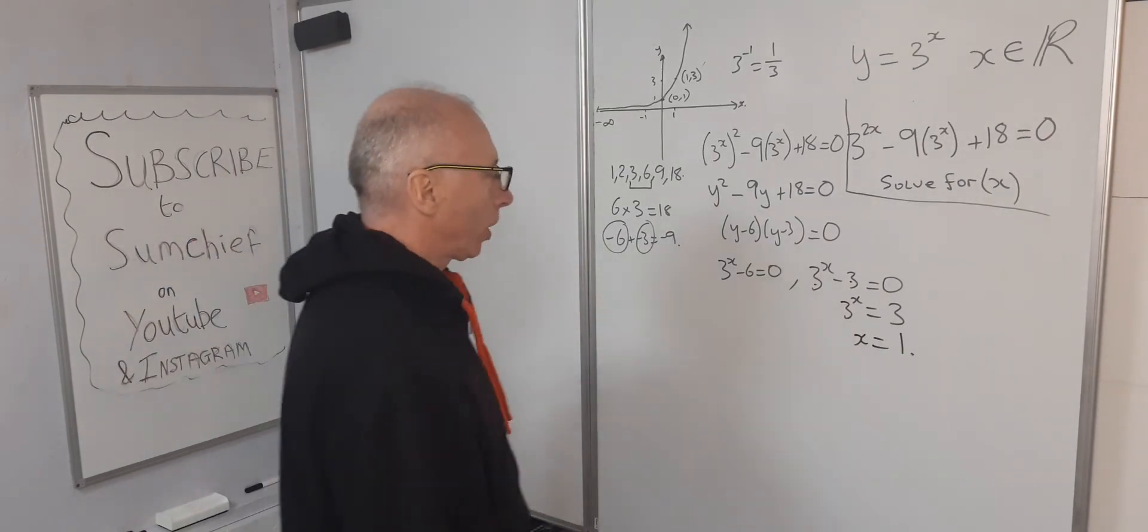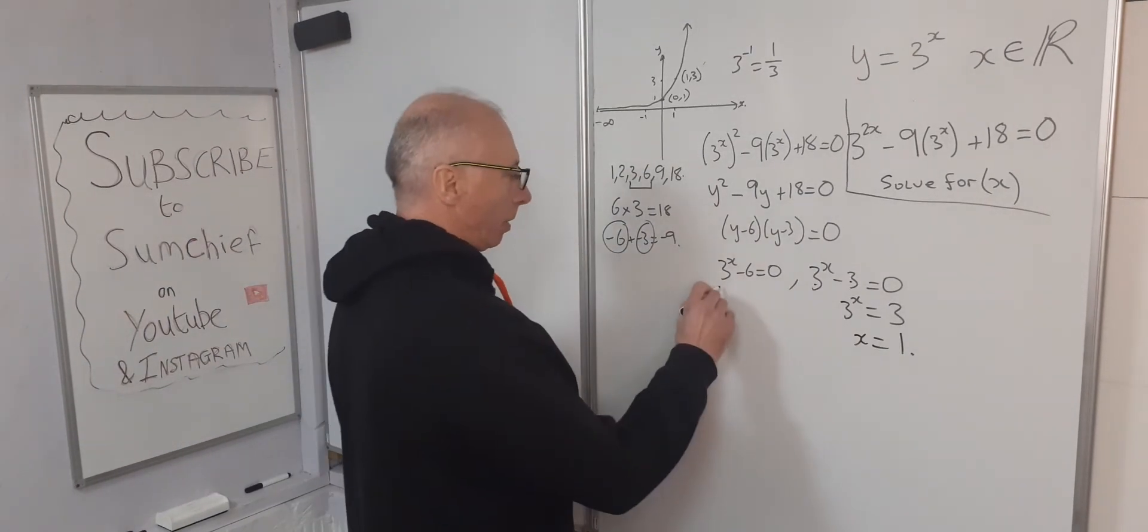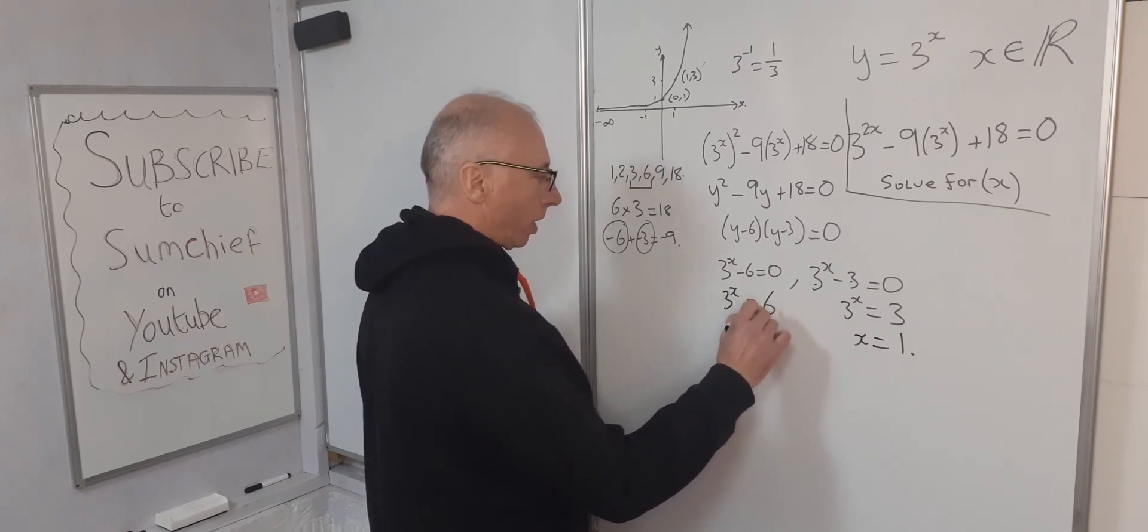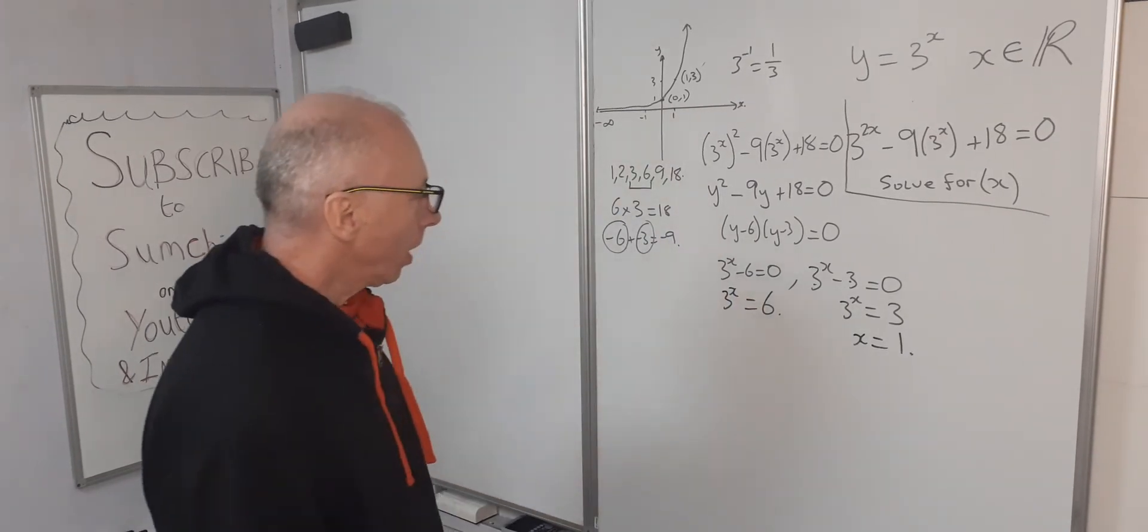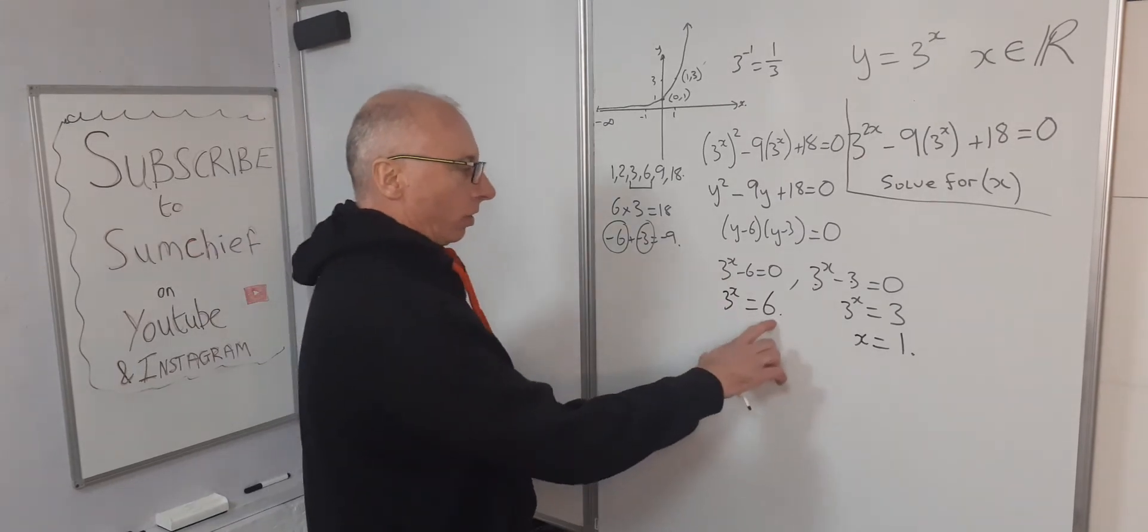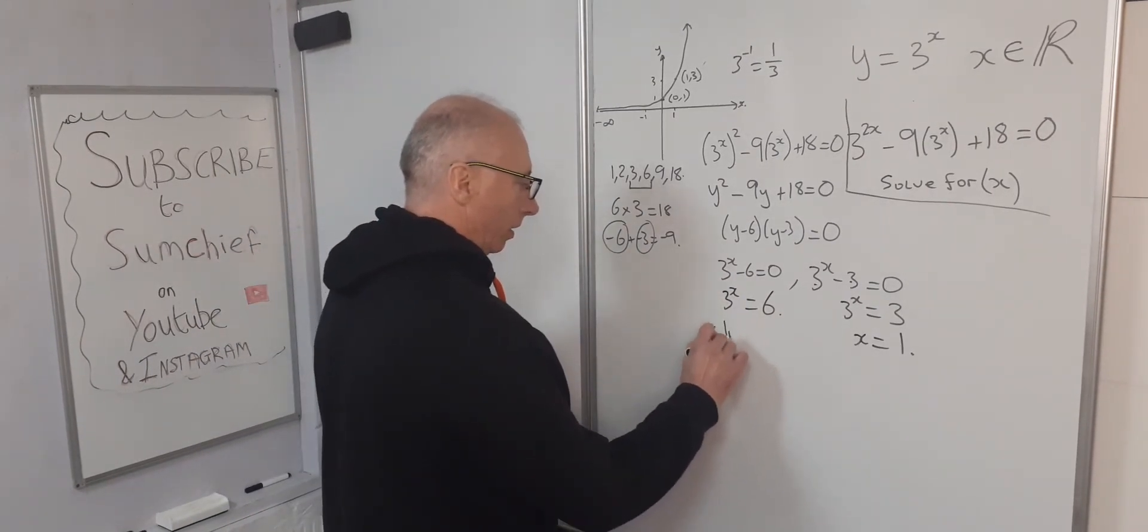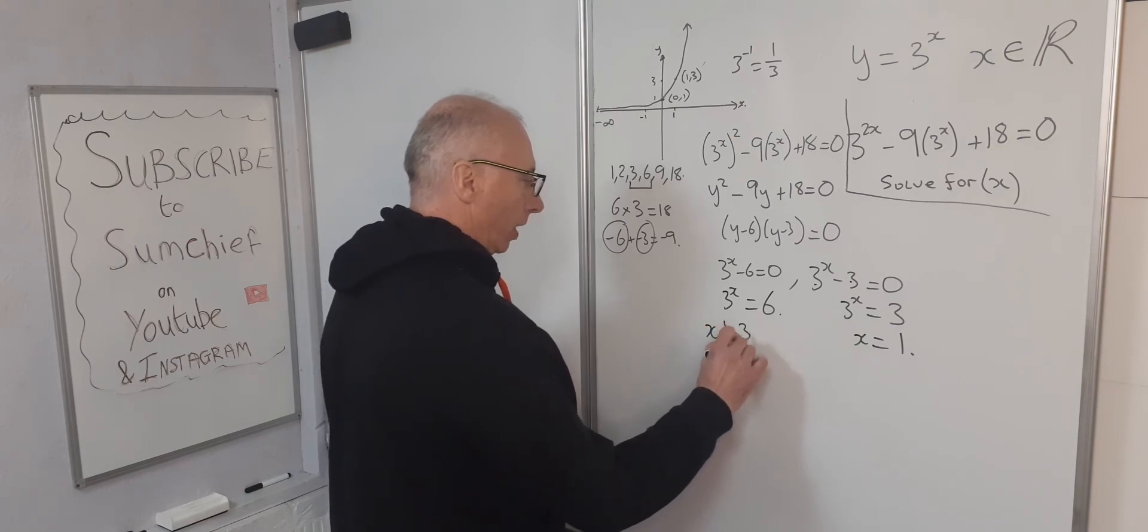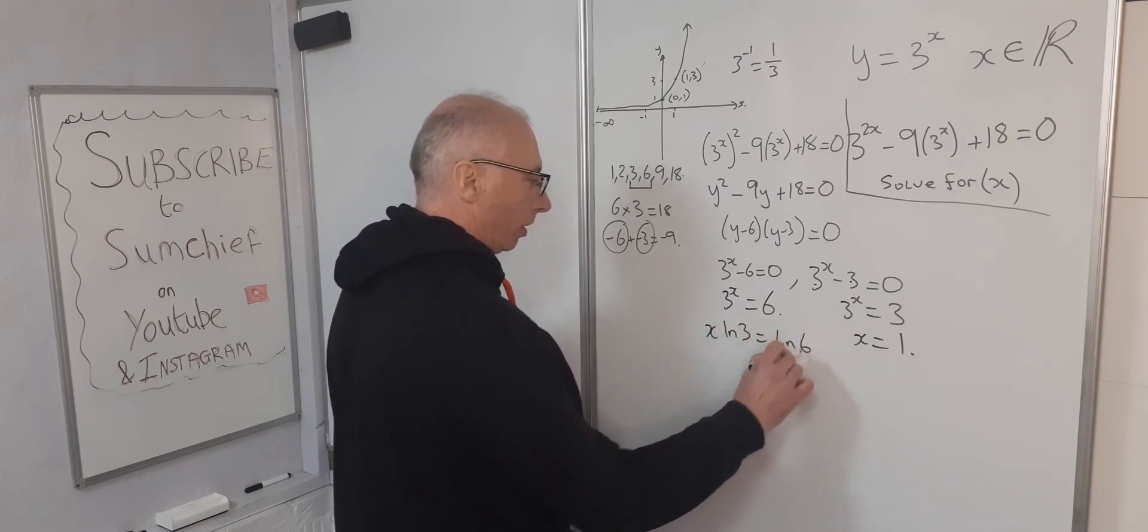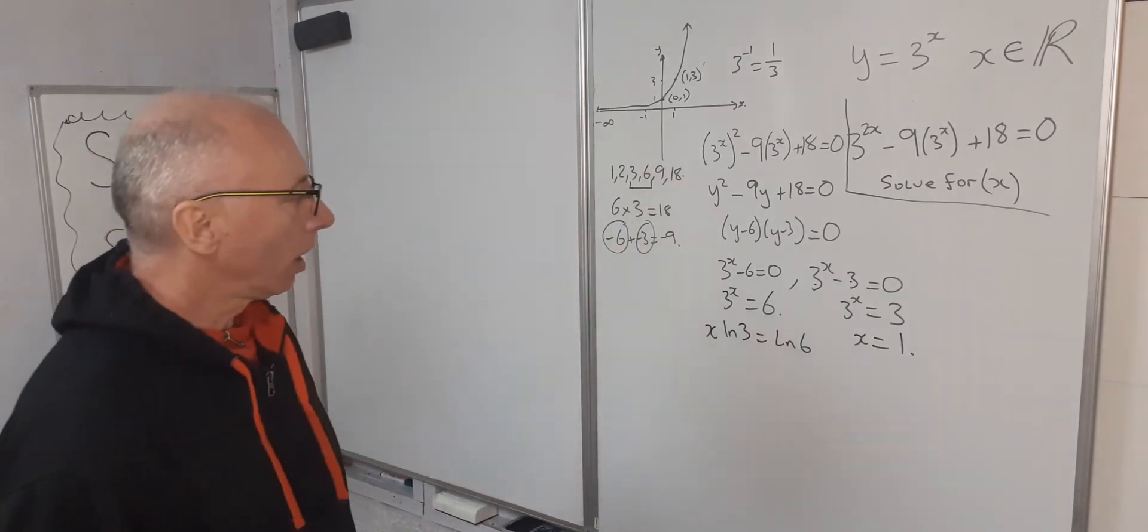This one looking a bit more tricky. Let's just play around with that one a bit. So 3 to the x equals 6. So if we take logs on both sides, natural log, we can say x natural log of 3 equals natural log of 6. Okay, right. That's helpful.